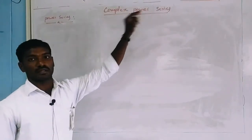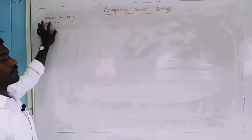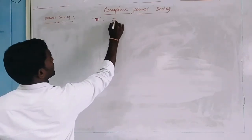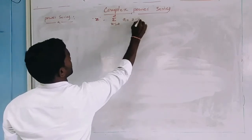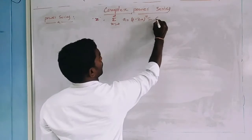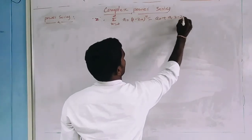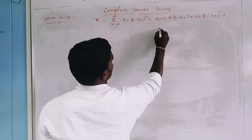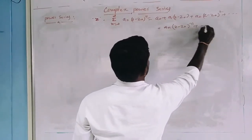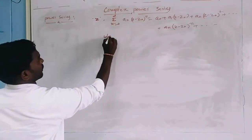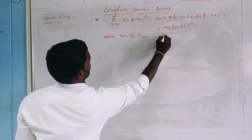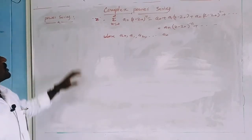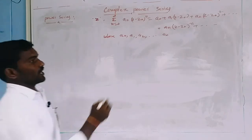Today our topic is complex power series. First of all we have to discuss the definition of a power series. For any complex number Z, a series of the form: summation n equals 0 to infinity of aₙ into Z minus Z-naught whole power n, equals a-naught plus a₁ into Z minus Z-naught plus a₂ into Z minus Z-naught whole square, plus and so on, plus aₙ into Z minus Z-naught whole power n, and so on. This is known as a power series in powers of Z minus Z-naught.